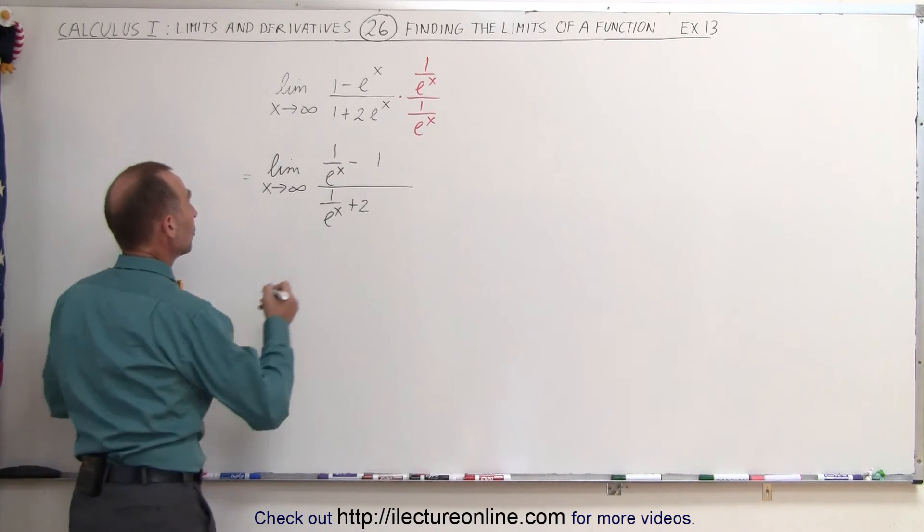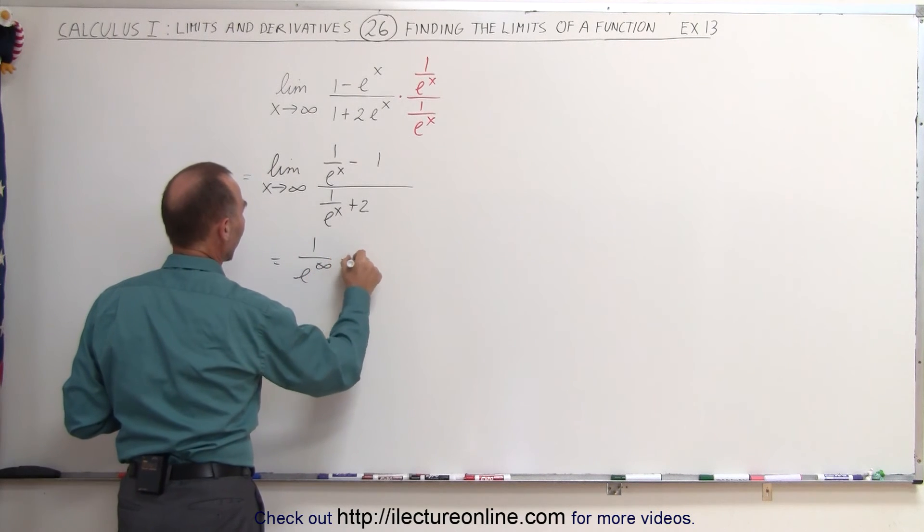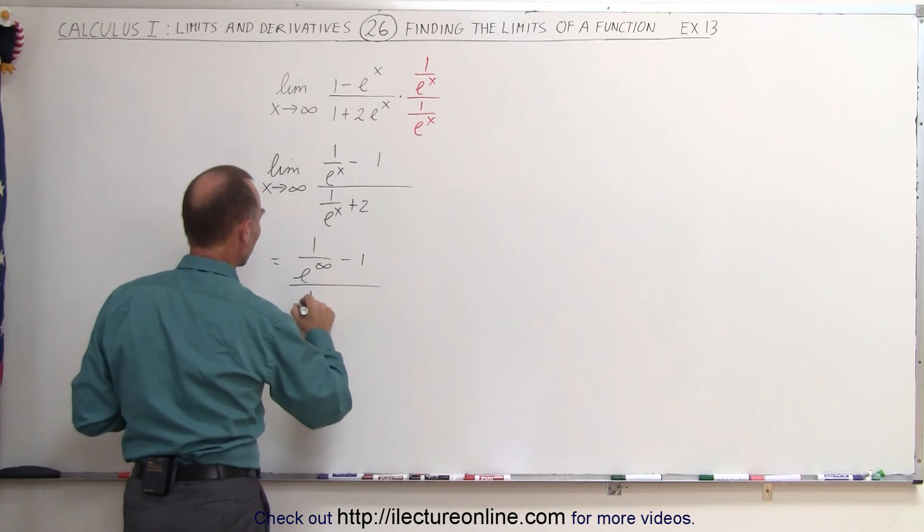Now when we plug in the limit, we get 1 over e to the infinity minus 1 divided by 1 over e to the infinity plus 2.